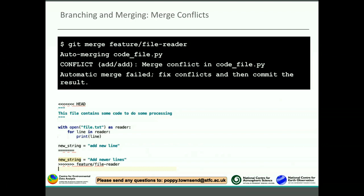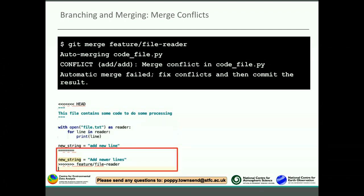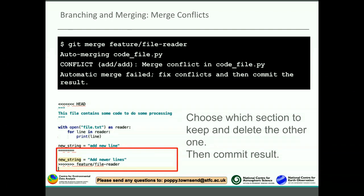You might come across merge conflicts - this happens when git isn't sure which change you'd like to keep. If two versions of a file look similar but have slightly different parts, git will create a merge conflict. In your file you'll see arrows and markers: lines with left-pointing arrows and 'HEAD' show what's in your current branch; after a line of equals signs, lines with right-pointing arrows show the incoming branch content. You choose which section to keep, delete the other one, remove the arrows and equals signs, then commit the result to complete the merge.